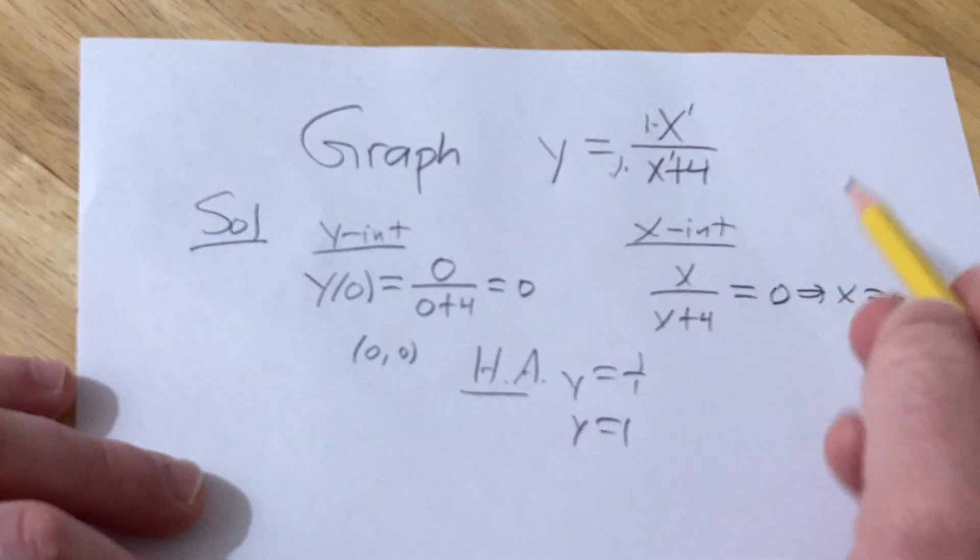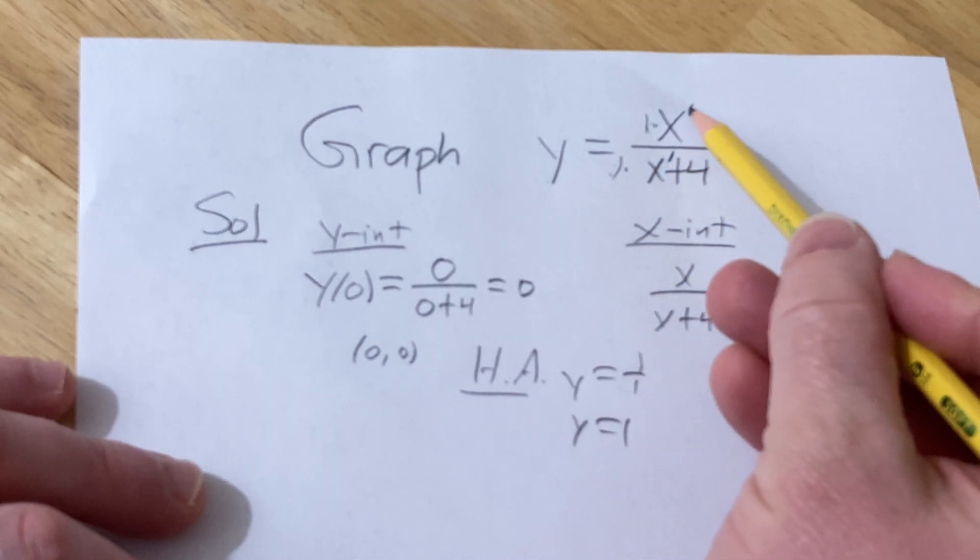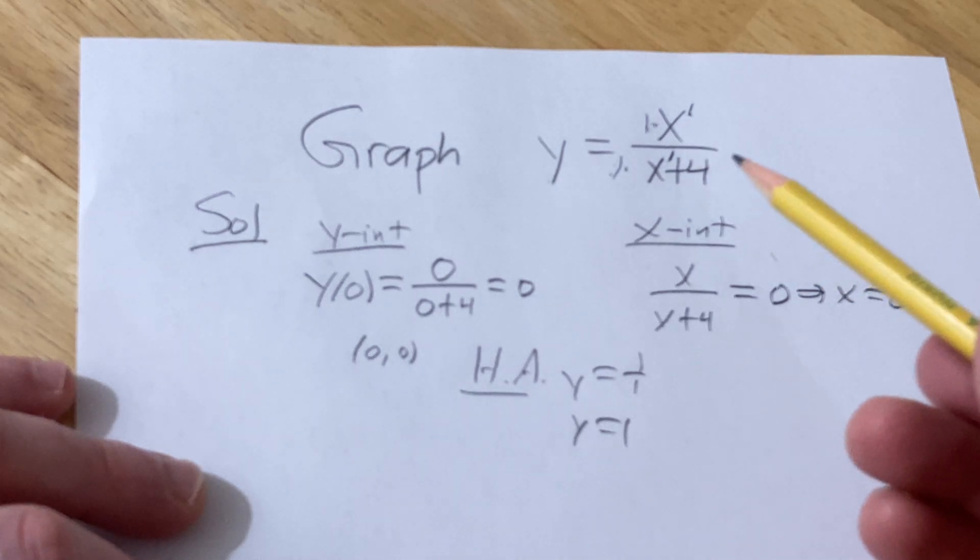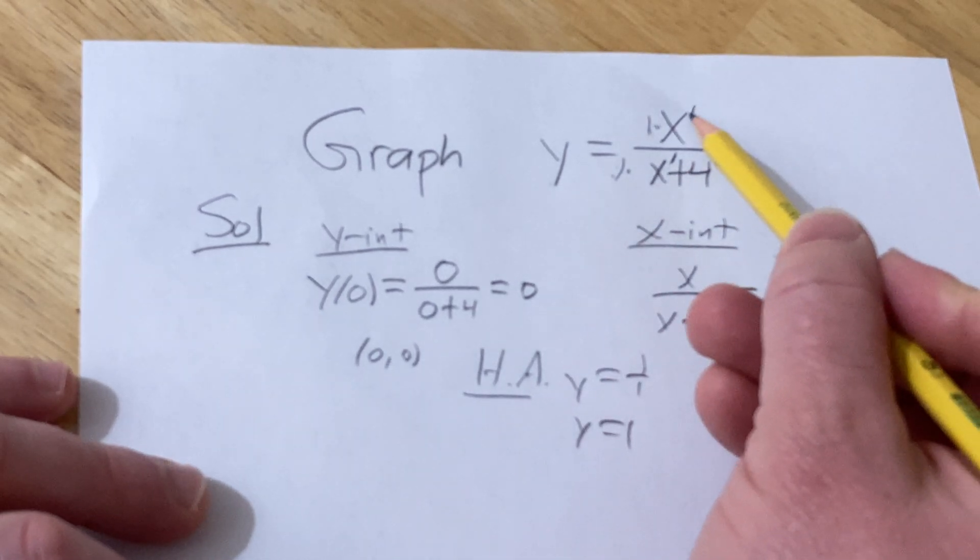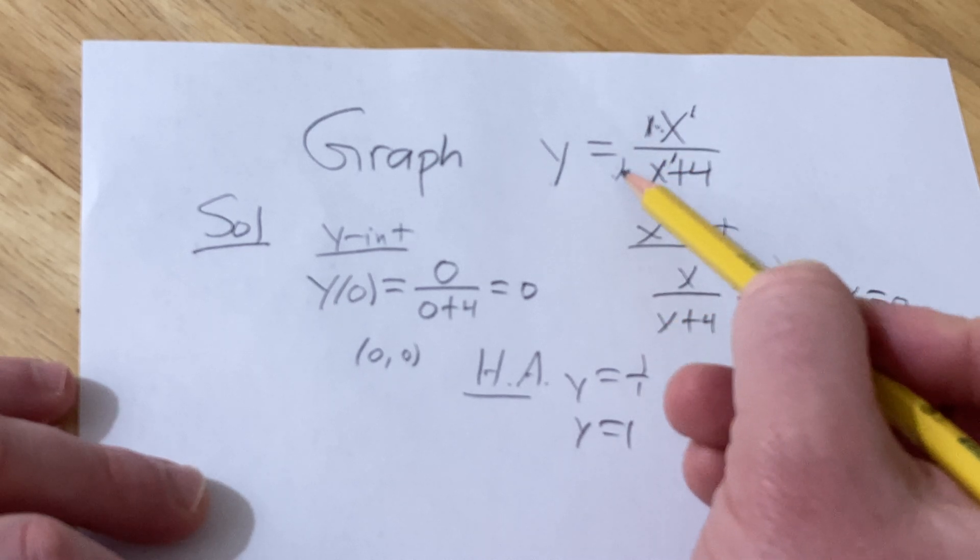That's because these match. If the degree is bigger on the bottom, it's 0. If it's exactly 1 higher on the top, you would use long division to find what's called the oblique, also known as the slant asymptote. But whenever they match like this in rational functions, you simply just divide the ratio of the coefficients.